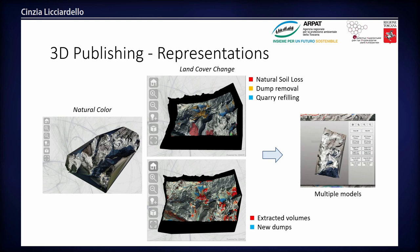We produced three kinds of 3D models: the first is a natural color model, the second is overlaid with the 2D layer of land cover changes, and the third is textured with extracted volumes and new dumps. These models are assembled on a single web page that allows the user to select and visualize them — an affordable tool for our technicians to check quarries associated with major environmental impacts.